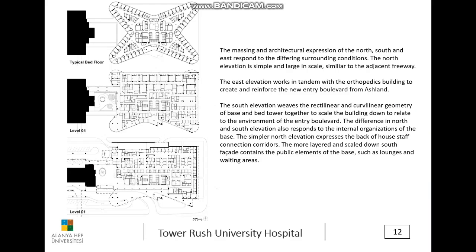The massing and architectural expression of the north, south, and east elevations respond to different surrounding conditions. The north elevation is simpler and large in scale, similar to the adjacent railway. The east elevation works in tandem with the orthopedics building to create and reinforce the new entry boulevard from Ashland. The south elevation weaves the rectilinear and curvilinear geometry of base and bed tower together to scale the building down to relate to the entry boulevard environment.